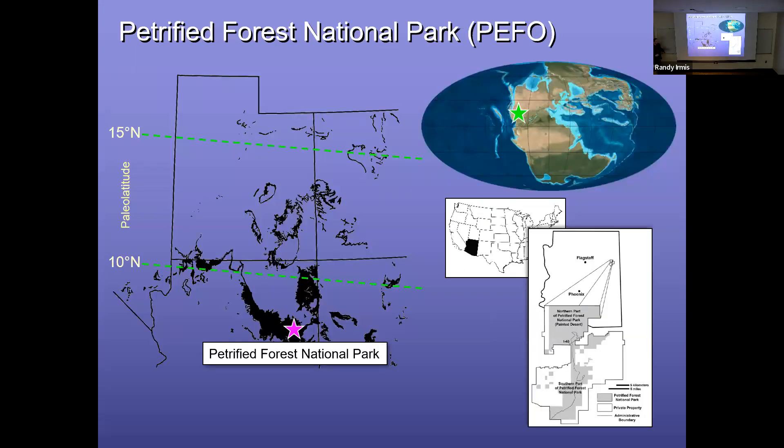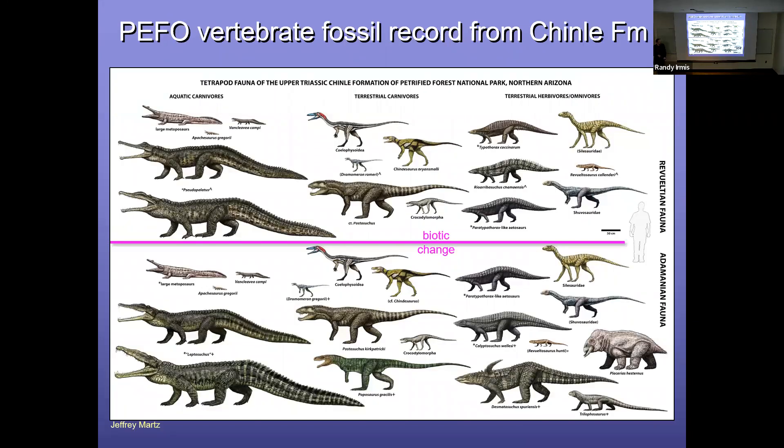So that is a work that we've been doing in Petrified Forest National Park, which is in northeastern Arizona. And back in the Triassic, it was in near equatorial paleo latitudes. And there's been a ton of work geologically and paleontologically over the past century in this park. In the Chinle Formation, which is late Triassic in age.